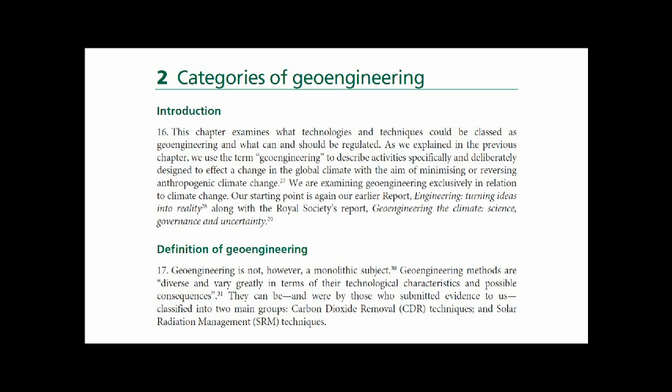Welcome back to part 2 of the Geoengineering series. I am going to start with the categories of geoengineering. This chapter examines what technologies and techniques could be classed as geoengineering and what can and should be regulated. We used the term geoengineering to describe activities specifically and deliberately designed to affect a change in the global climate, with the aim of minimizing or reversing anthropogenic climate change.